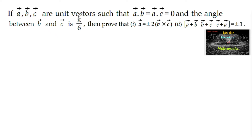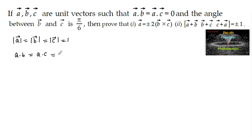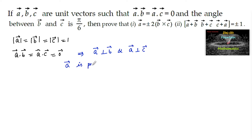If a, b, c are unit vectors — that is |a| = |b| = |c| = 1 — and a·b = a·c = 0, this indicates that a is perpendicular to b and a is perpendicular to c, meaning a is perpendicular to both vectors b and c.